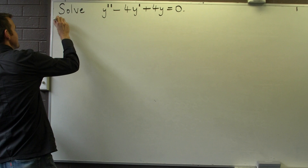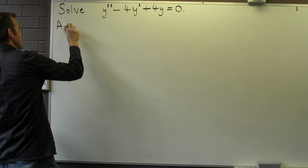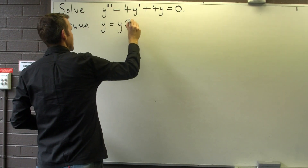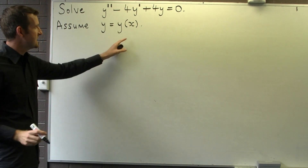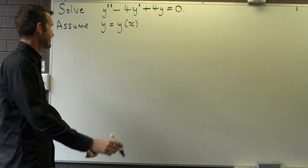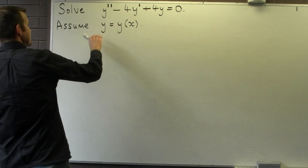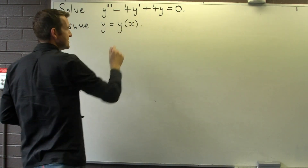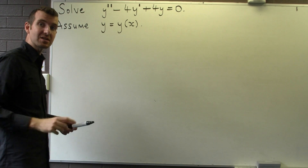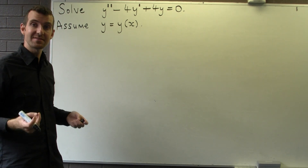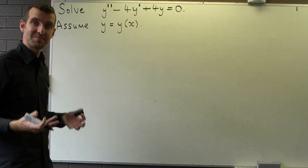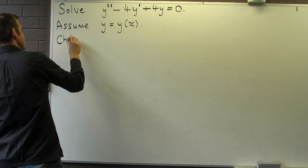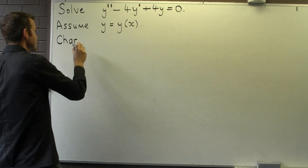First of all, some notation. Let's assume that the independent variable is x. The basic idea with these simple problems with constant coefficients is that we essentially break the analysis down to the analysis of the roots of a quadratic. For that, we need the so-called characteristic equation.